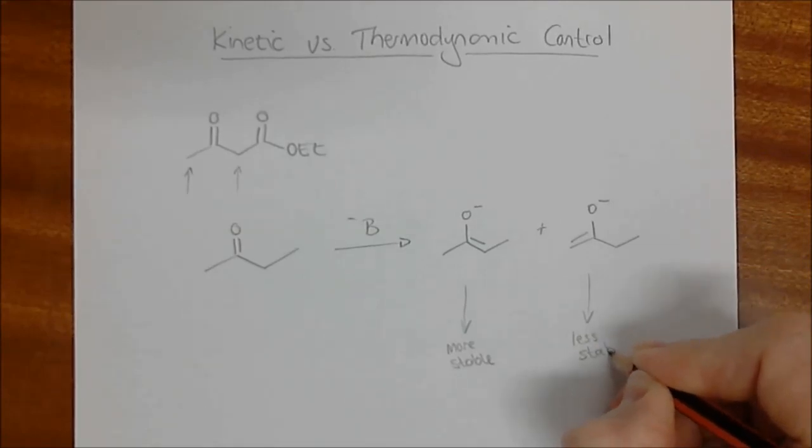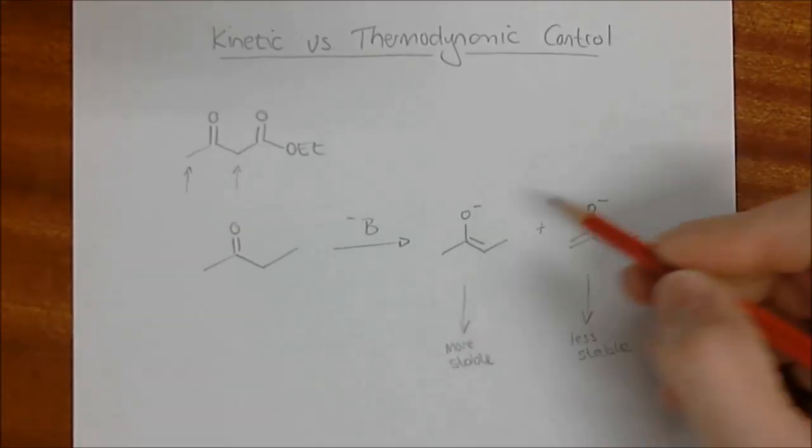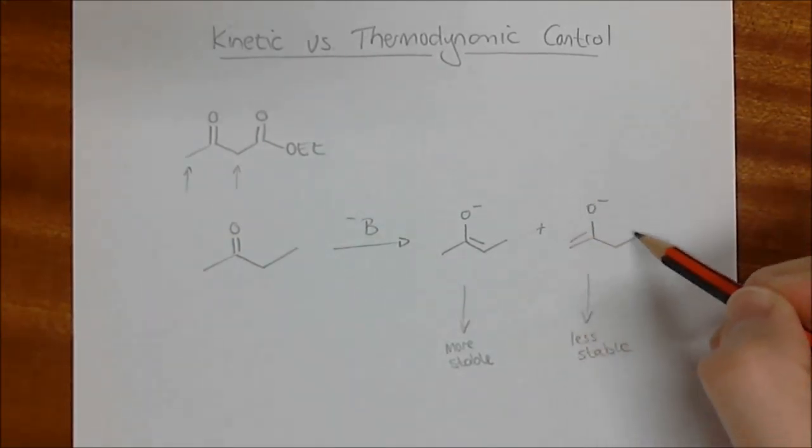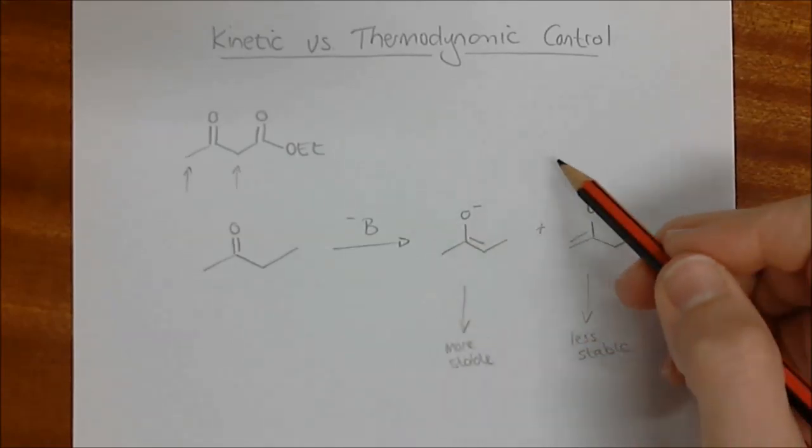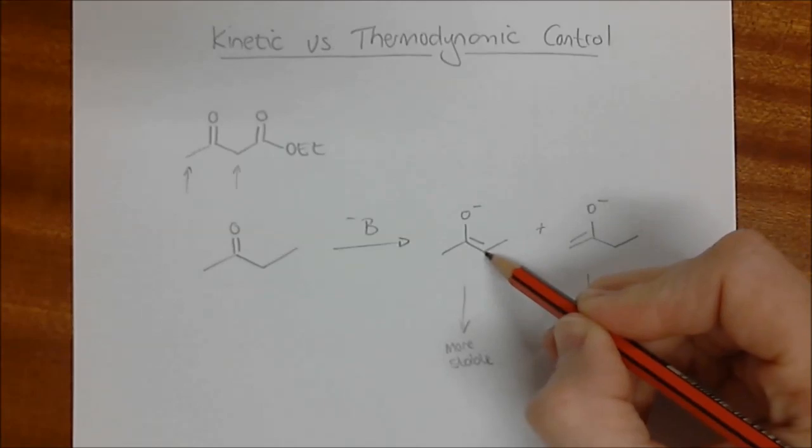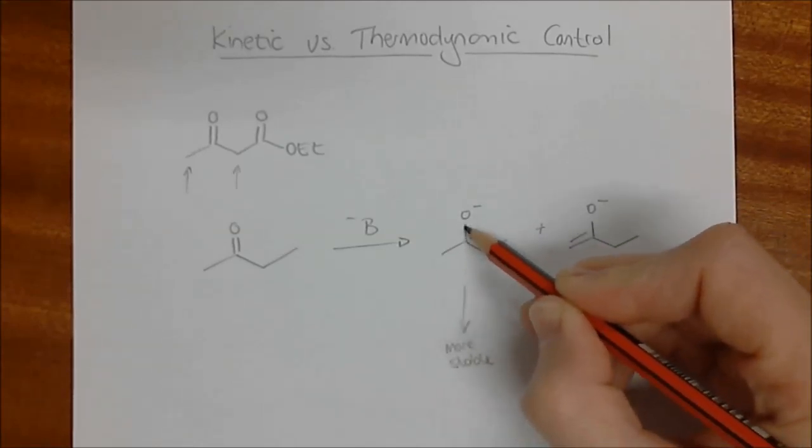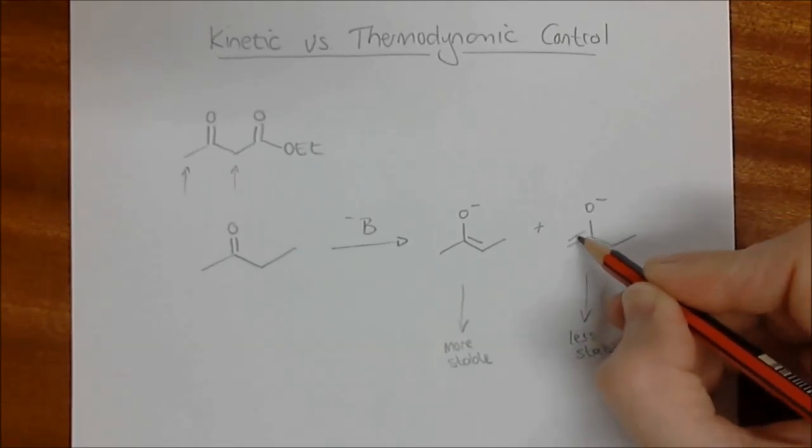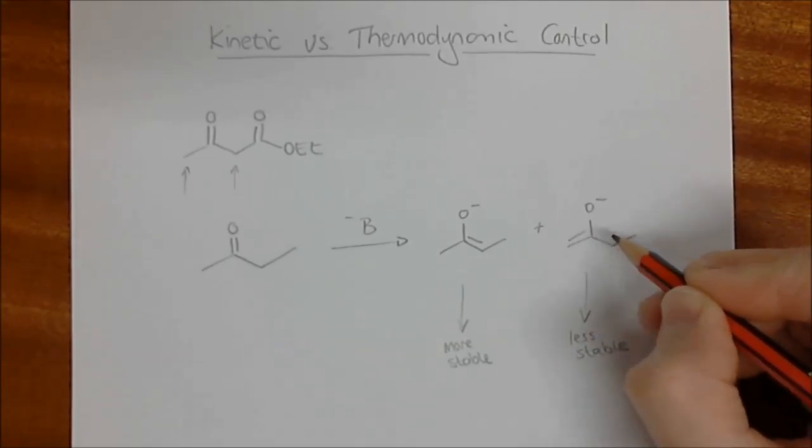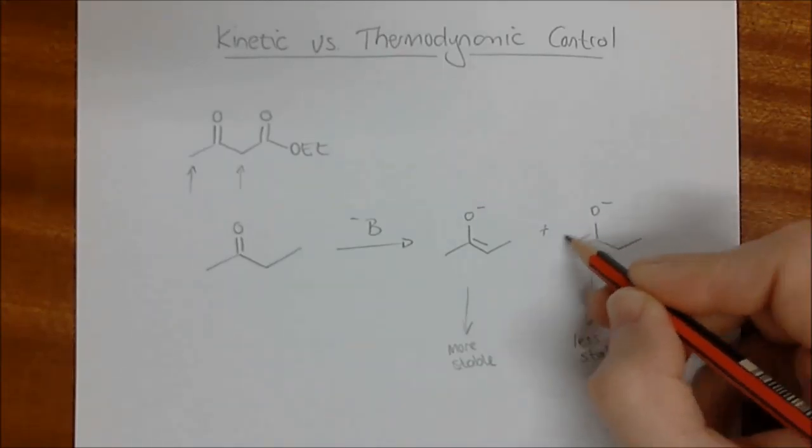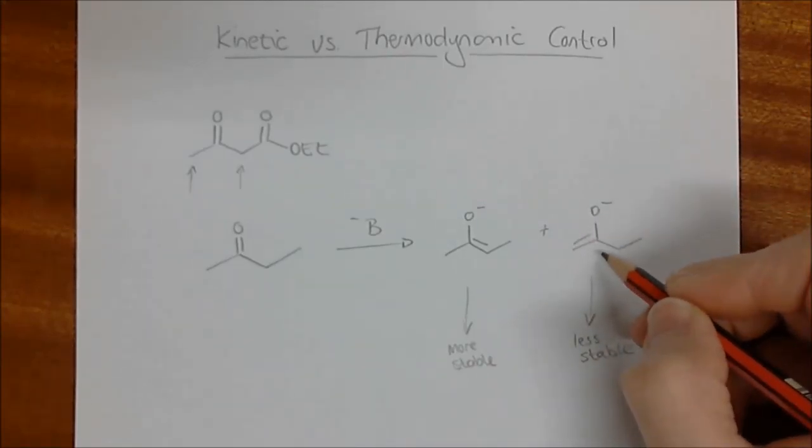When we talk about stability, we're talking about the overall energy of these systems, so this one over here will be at a slightly higher energy than this molecule over here. The reason for this is that the double bond here has three substituents on it and over here this double bond only has two substituents, obviously not counting the hydrogens.